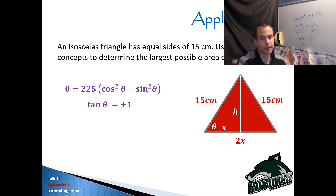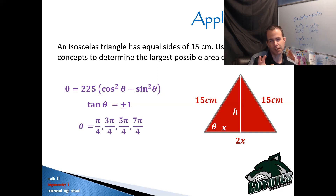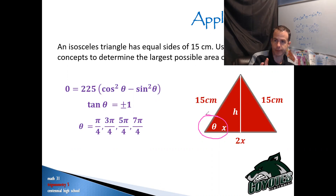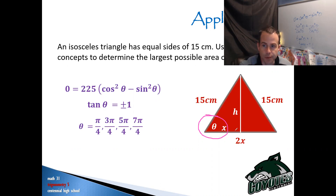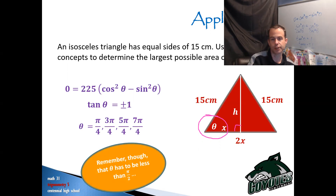Where does tan theta equal plus or minus one? That's every reference angle of π/4: so π/4, 3π/4, 5π/4, and 7π/4. But we have to think about the context of this question. Theta is inside a right triangle, so theta has to be less than π/2 — the only 90-degree angle in this triangle is the one at the base, not theta. So in the constraints of the context, the only critical number I care about here is π/4.